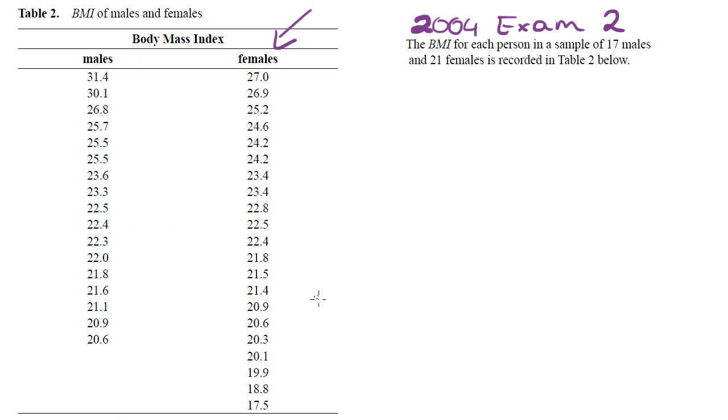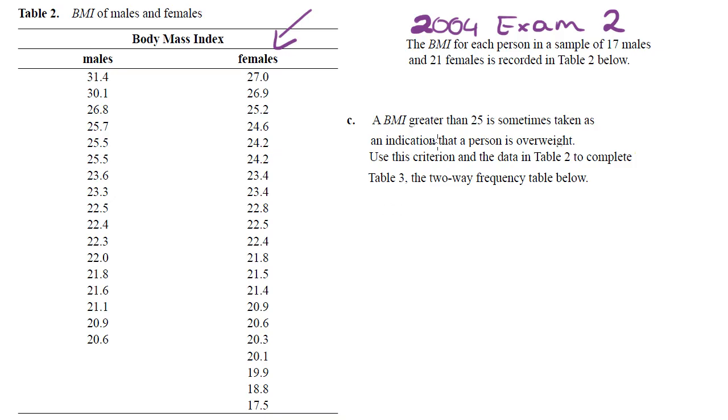And then the question said this, a BMI greater than 25 is sometimes taken as an indication that a person is overweight. Use this criterion and the data in table 2 to complete table 3, the two-way frequency table below. And then this was below.